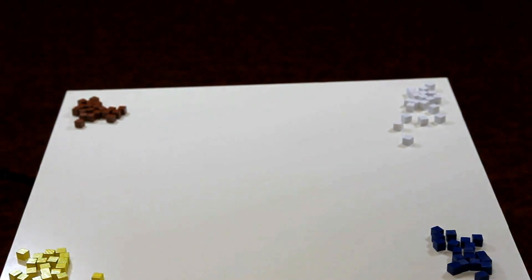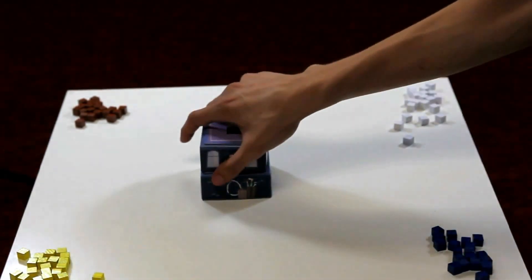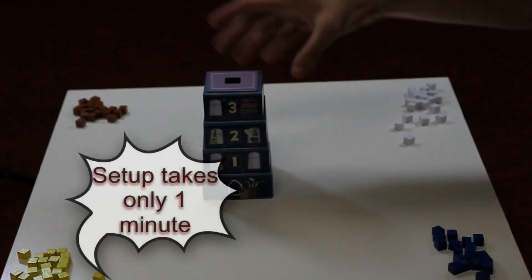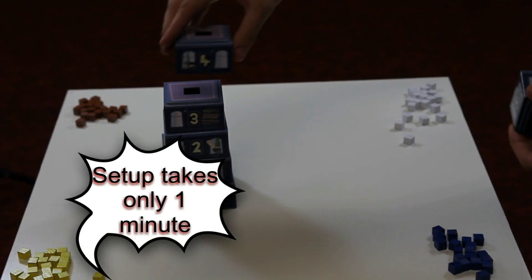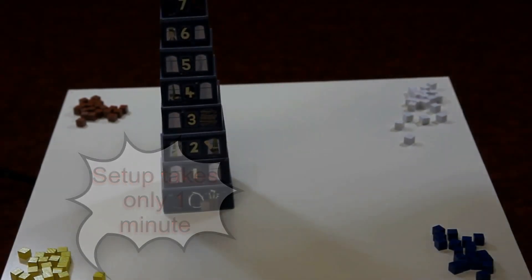The setup is fast and takes only a minute. First, every player selects their color and takes the matching cubes that you construct. Select the hotel tower and place the investigation sheet next to the tower.